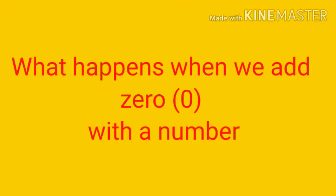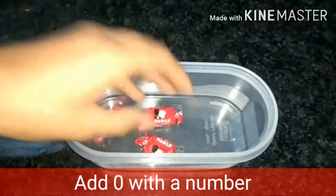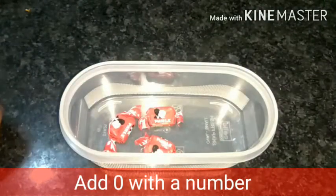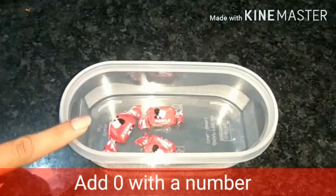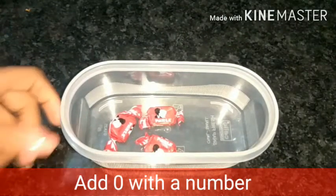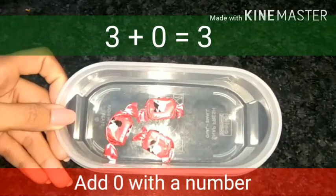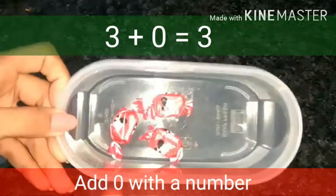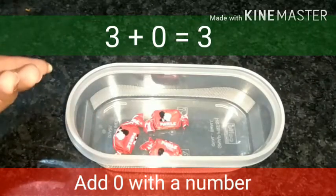What happens when we add zero with a number? Three toffees are in the container. Zero toffees have been added. Count the toffees in the container now. Yes, three plus zero equals to three because zero objects have been added.